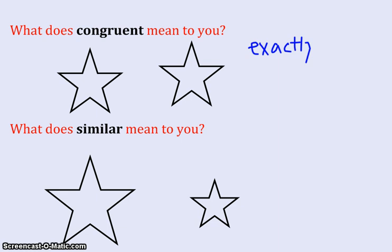In this case, the two stars are exactly the same. The sides are all the same length, the angles are all the same measure. Exactly the same, congruent means equal. That is the congruent symbol, an equal sign with a squiggly above it.